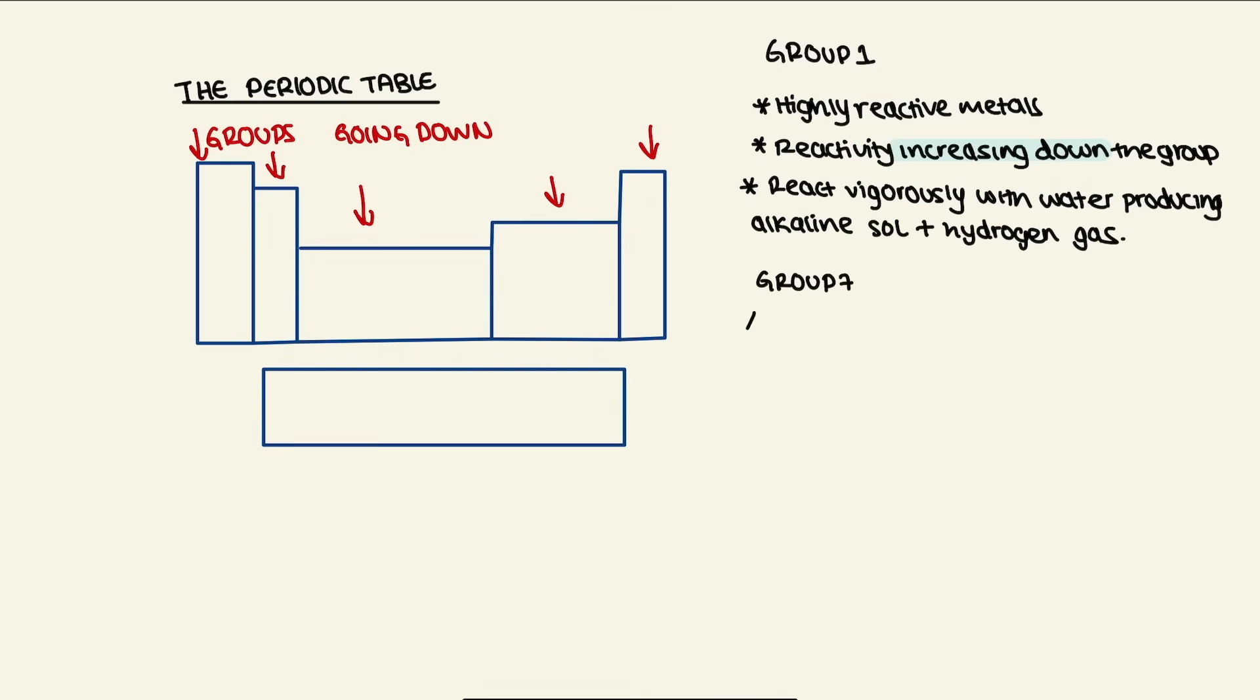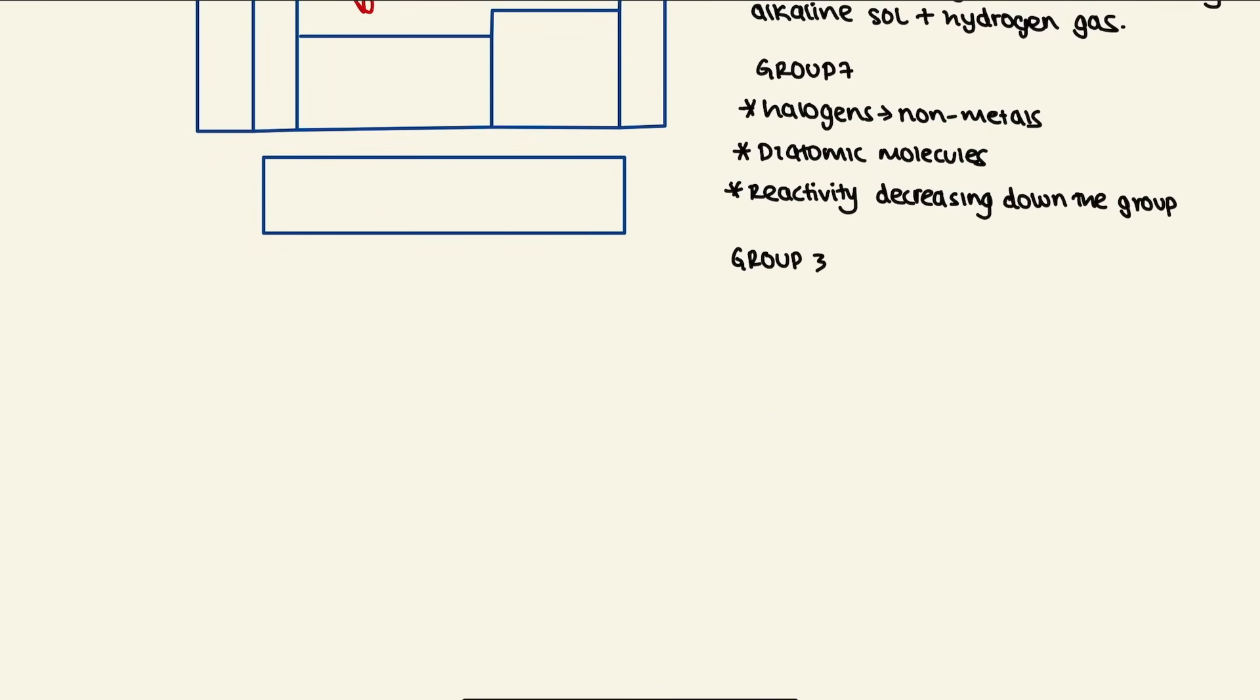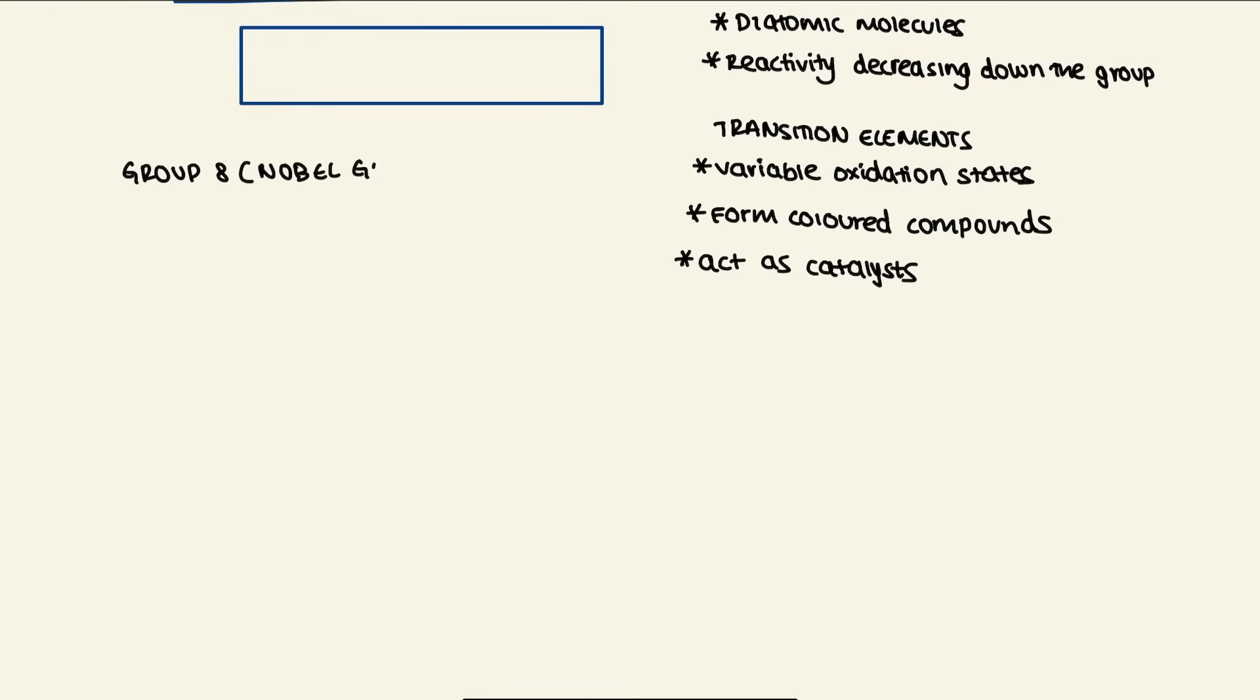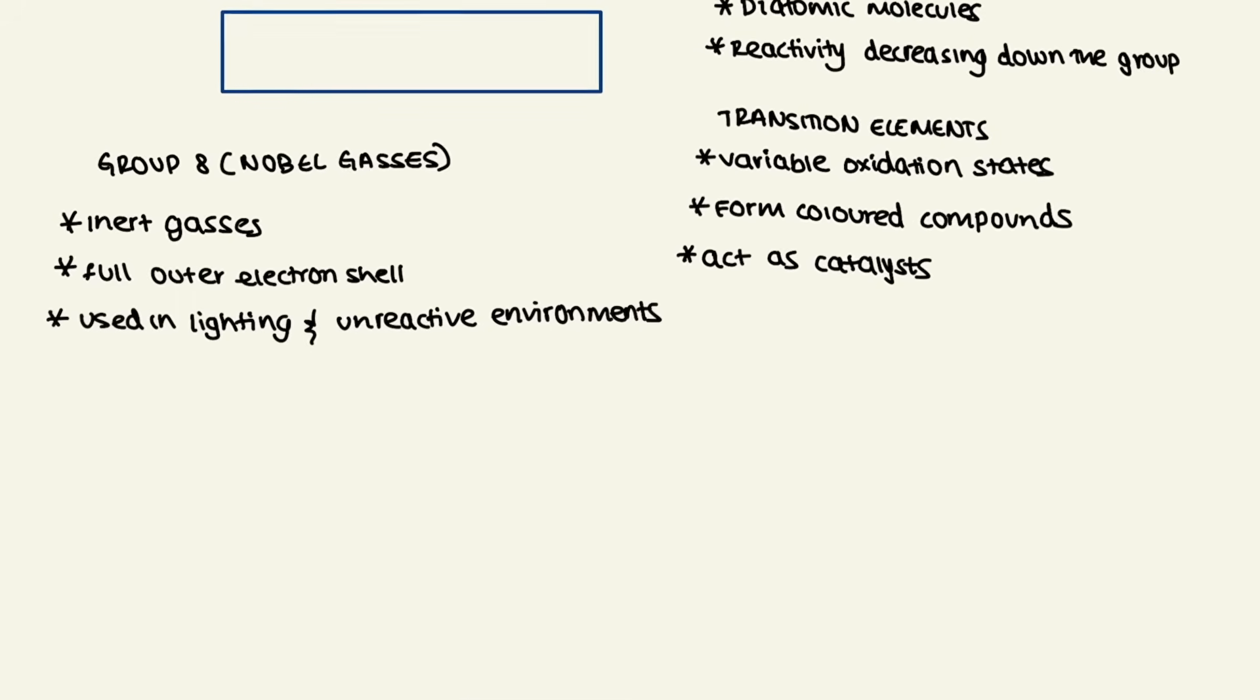Group 7 elements, which are halogens, are non-metals and they are diatomic molecules with reactivity decreasing down the group. We then have transition elements, which are metals with variable oxidation states, forming colored compounds and acting as catalysts. Noble gases are group 8, which are inert gases with full outer electron shells and they are used in lighting and as unreactive environments.